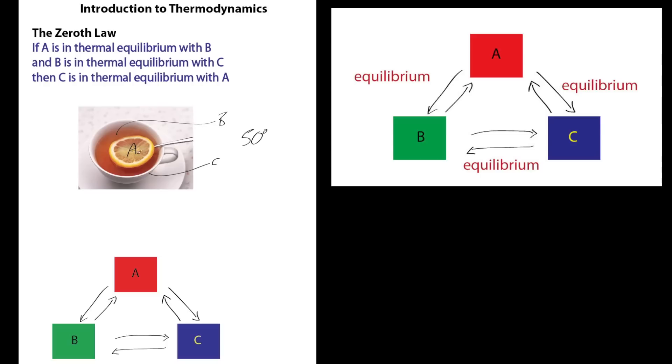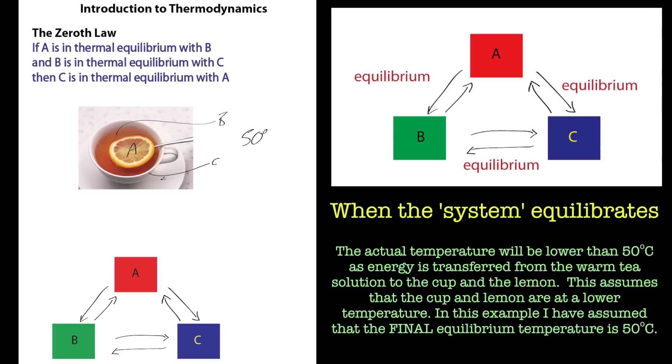The lemon will be at 50 degrees, unless it cools down to the atmosphere, but imagine it can't cool down. And eventually the cup will become 50 degrees because the earl grey tea is warming the cup up as well.